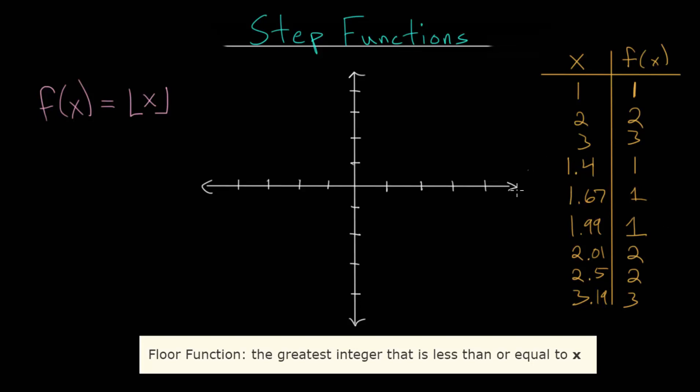So to graph this function, let's just get an idea of this. So if we plug in 1, we know that we're going to get a function value of 1. And let me use this color here. And if we plug in 1.4, we also got that same value of 1. If we plug in 1.67, we got 1. 1.99, we got 1.